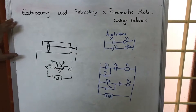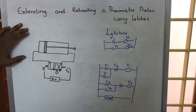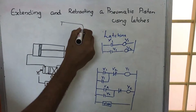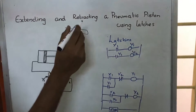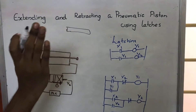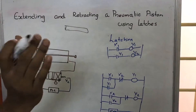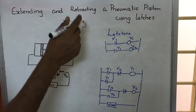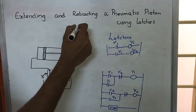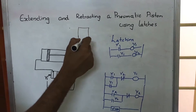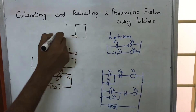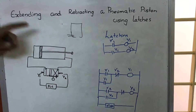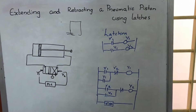A pneumatic piston is being used here. Suppose we have a wall or a gate that we want to open and close — we connect it to a piston via linkage, and the mechanism of opening and closing that door is being discussed here.